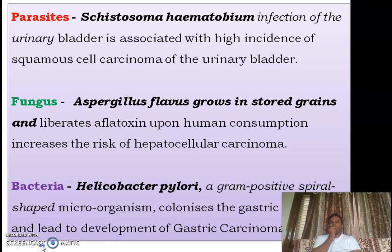For example, taking parasites: Schistosoma haematobium is one of the most important examples, which generally causes urinary bladder infection. Chronic infection with Schistosoma haematobium results in the development of urinary bladder carcinoma.